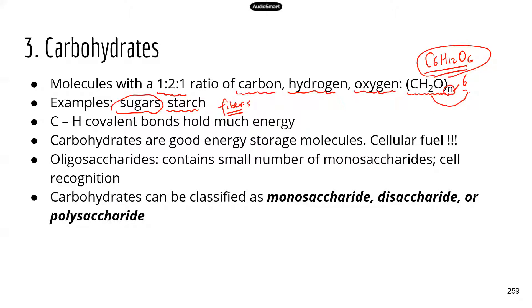Carbohydrates have critical functions — they are used for energy storage. Our body obtains energy from carbohydrates in food, and our body can also store excess energy in the form of carbohydrates. Why are carbohydrates so critical as an energy source? Because the carbon-hydrogen bond — a type of chemical bond called a covalent bond — can hold a lot of energy, and carbohydrate molecules have many carbon-hydrogen bonds.